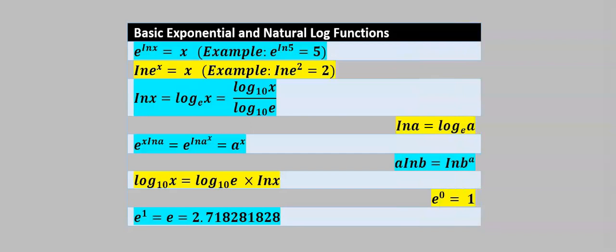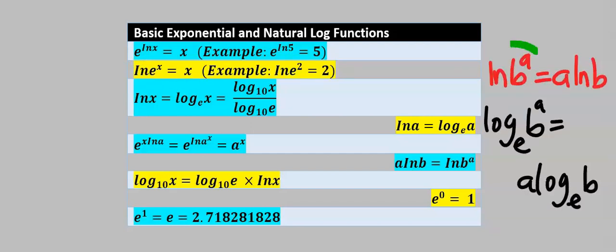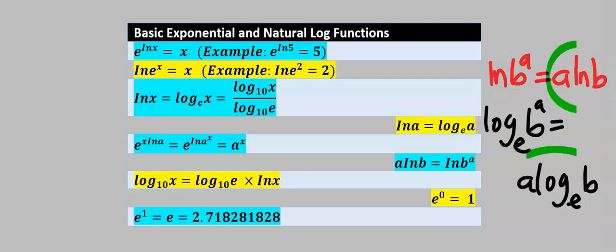Before we do this, let's recap from basic exponential and natural log functions. The natural log of x is the same as log x of base e. Exponential can neutralize natural log to release x, and natural log can neutralize exponential to equally release x. Also, the natural log of b to the power of a is equal to a times the natural log of b.